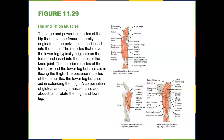The anterior muscles of the femur extend the lower leg but also aid in flexing the thigh — they're two-joint muscles. The posterior muscles flex the lower leg (the knee) but also aid in extending the thigh — also two-joint muscles. If you fix one end, it causes movement at the hip; fix the other and it may cause movement at the knee.